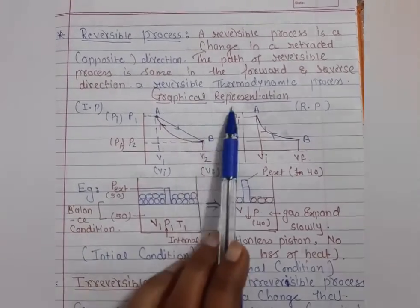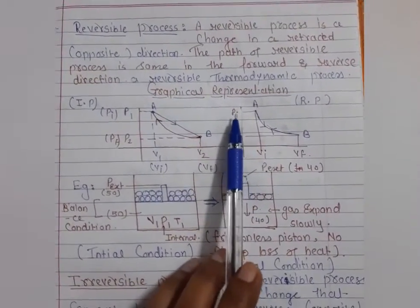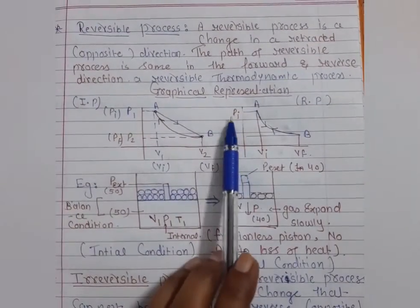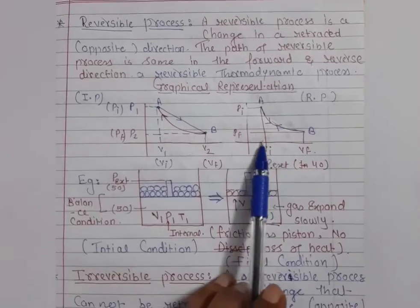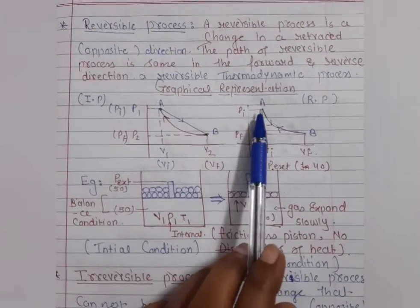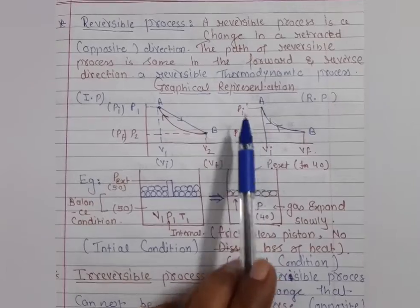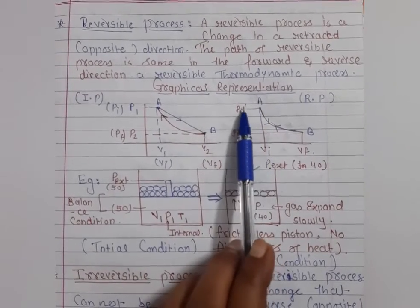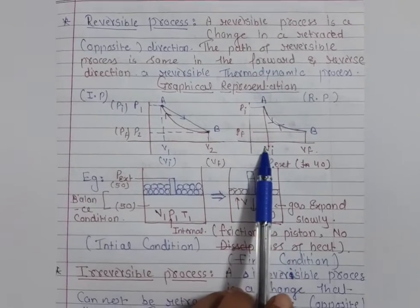With the help of this graphical representation, you can understand. On the y-axis the pressure is present, and on the x-axis the volume is present. At point A, the volume is V1 and the pressure is P1 — that is the initial pressure and initial volume.